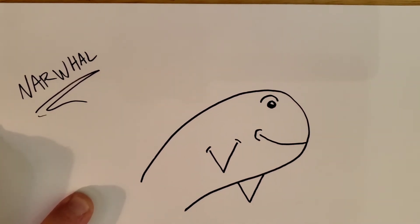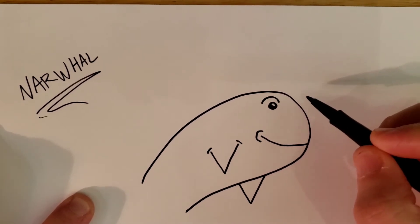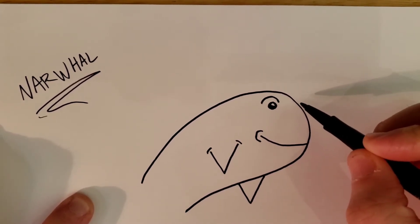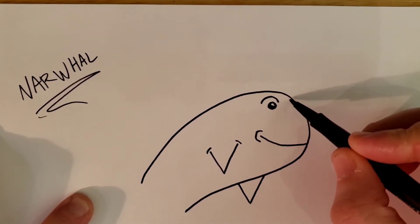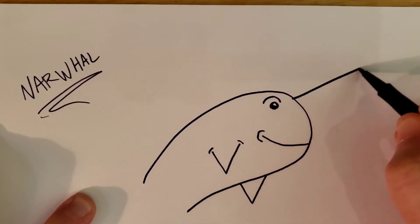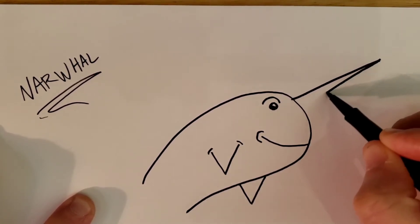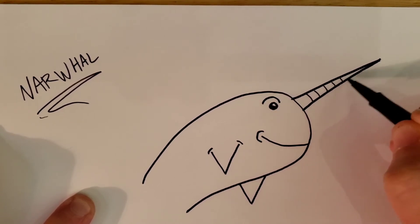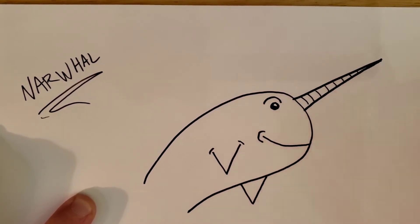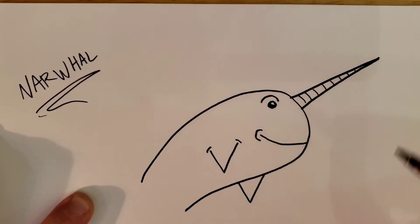Now this is why they're called the unicorns of the sea—because they're kind of almost like a dolphin or a whale, but they have a big horn that comes up out of the front. So you're going to go up and come back down, and you'll put some lines on it. That's why they're called the unicorns of the sea—because they have a facial horn.